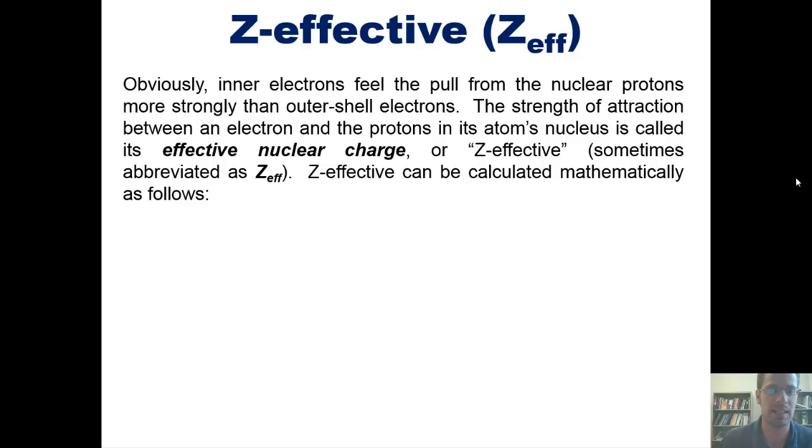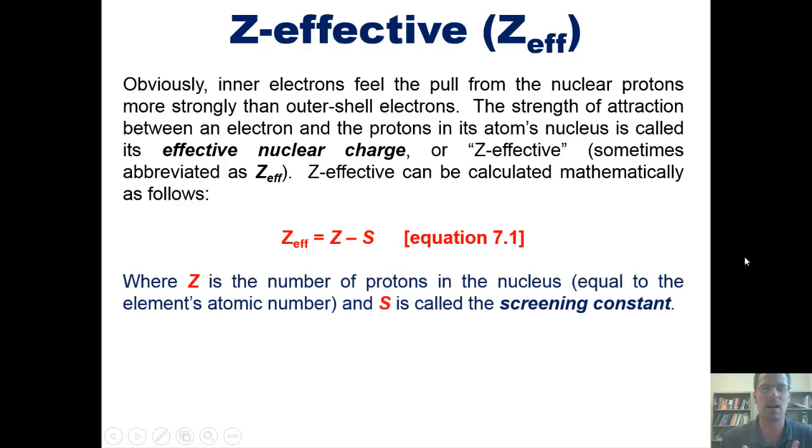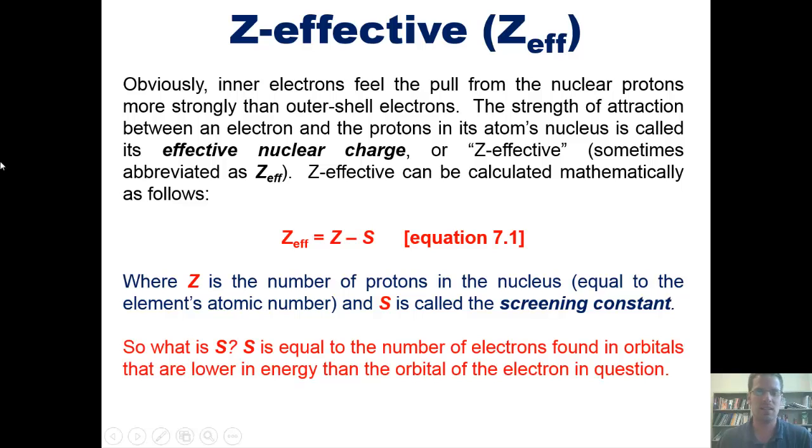Z-effective can be calculated mathematically using this equation: Z-eff equals Z minus S, where Z is the number of protons in the nucleus, which is always equal to that element's atomic number, and S is something called the screening constant. So what is a screening constant? A screening constant is equal to the number of electrons found in orbitals that are lower in energy than the orbital of the electron in question.